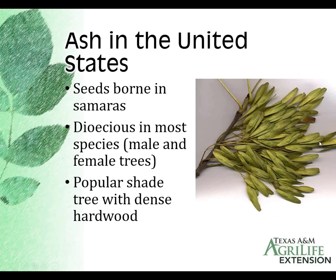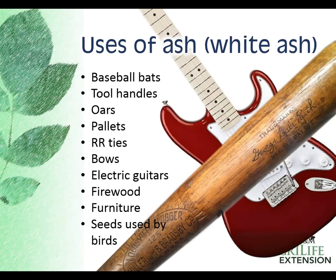One of the most distinctive features of the ash tree are its seeds. They're borne in flat single samaras, similar to about half of a maple samara. They're dioecious trees — both male and female trees — so only half the trees would show seeds. A very popular shady tree with dense hardwood and many commercial uses, everything from baseball bats to electric guitars. The wood's flexibility and strength makes it useful for oars, railroad ties, bows and arrows. It's been the principal wood used by Major League Baseball for bats.